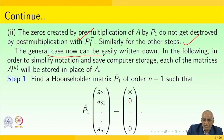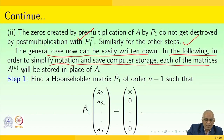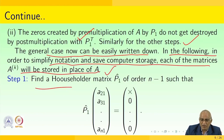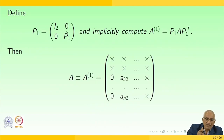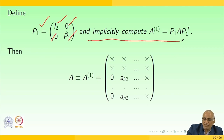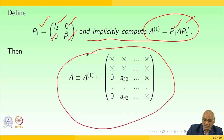In the general case, to simplify notation and save computer storage, each matrix A_K is stored in place of A. Find a Householder matrix P̂₁ of order N-1 such that P̂₁·[A_{21}, A_{31}, ..., A_{N1}]ᵀ = [x, 0, 0, ..., 0]ᵀ. Define P₁ as a block matrix with I₂ in the upper-left and P̂₁ in the lower-right, then implicitly compute A₁ = P₁·A·P₁ᵀ, which produces non-zero entries along the Hessenberg structure with zeros below the first subdiagonal.